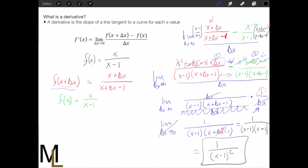And this can be simplified slightly to one over x minus one squared. And that's your derivative of this function here. So this is your f prime of x. Great, thank you.